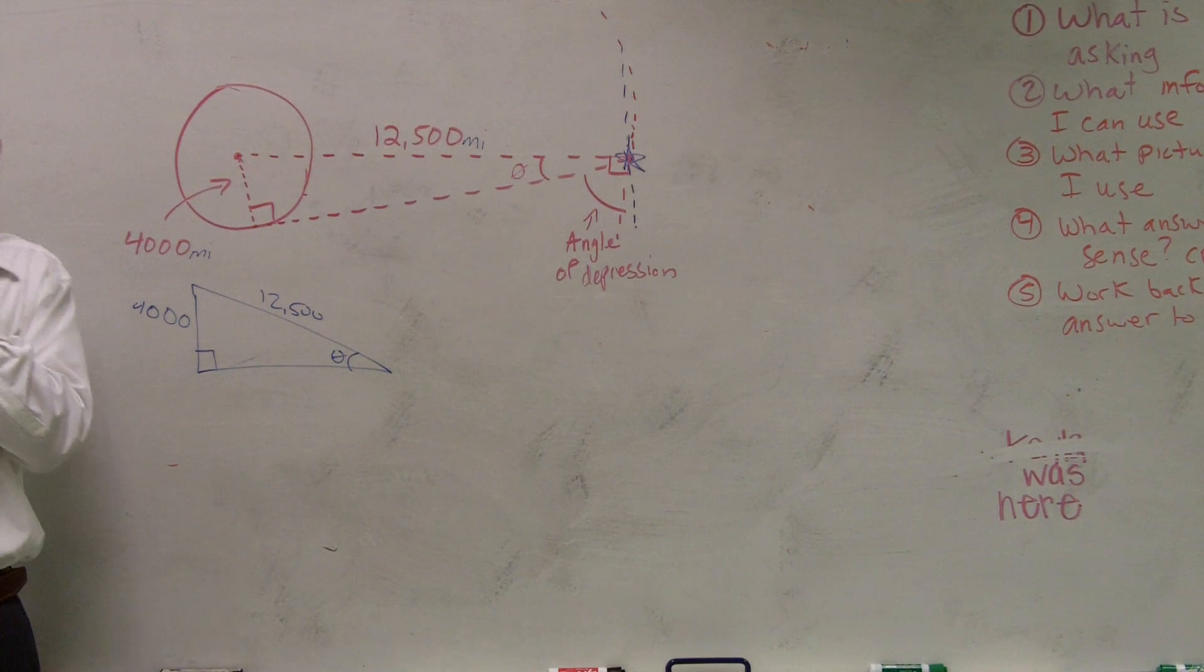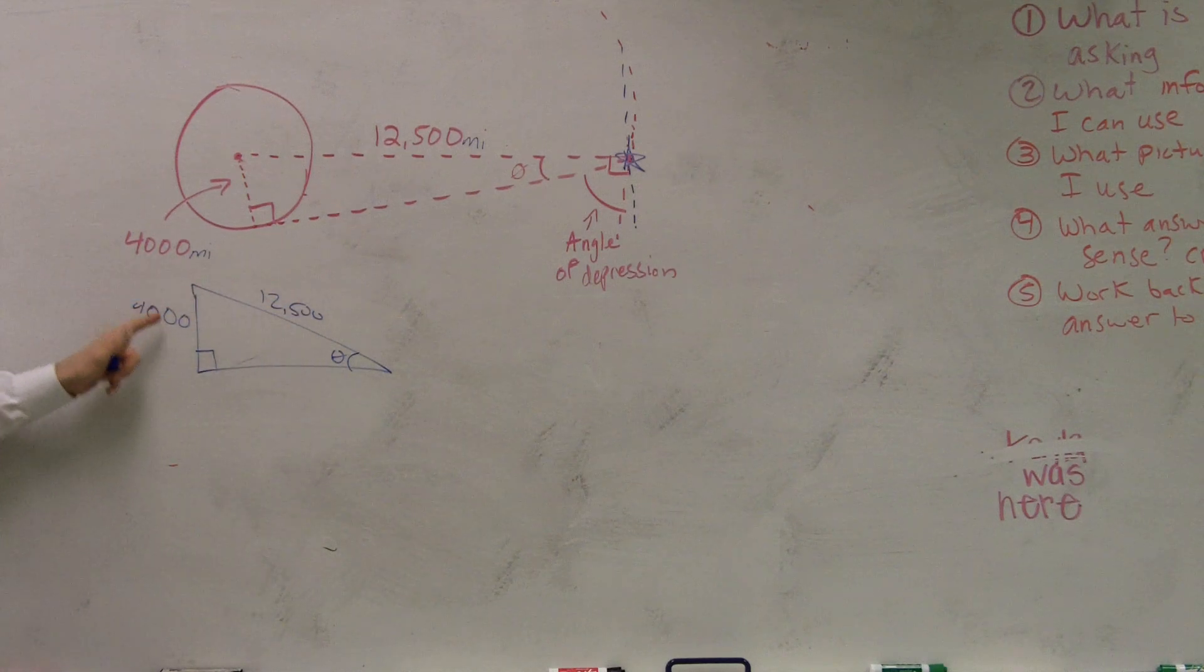There's only three of them: sine, tangent, cosine. Which one deals with the opposite of your theta and the hypotenuse? Sine, right?